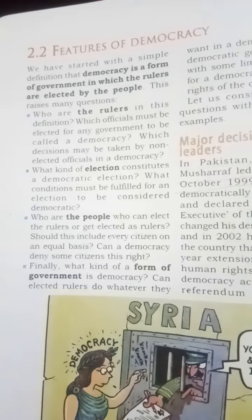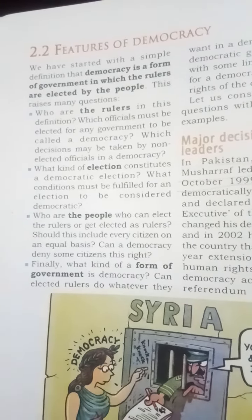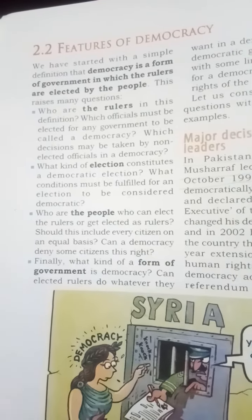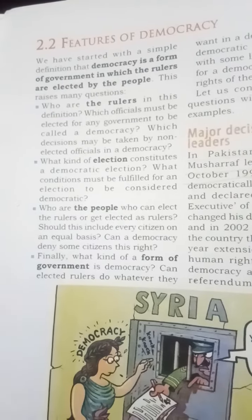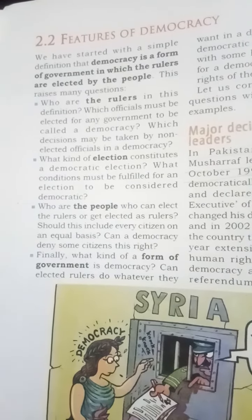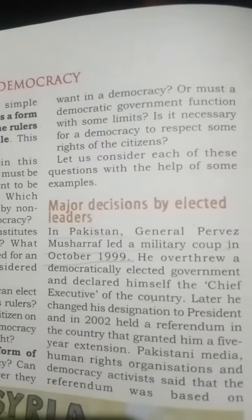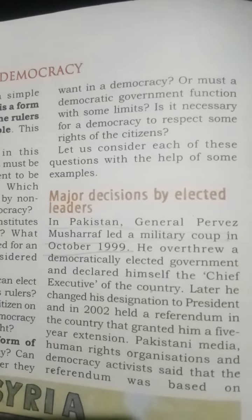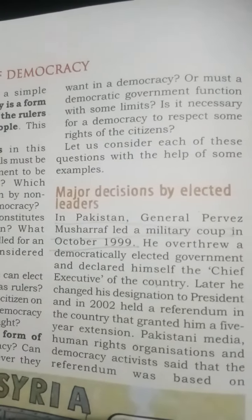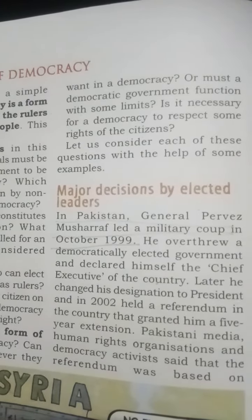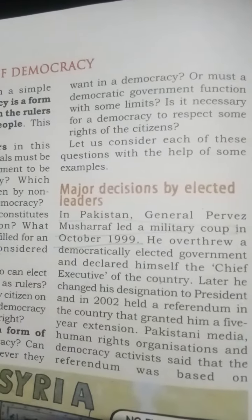Should this include every citizen on an equal basis? Can a democracy deny some citizens this right? Finally, what kind of form of government is democracy? Can elected rulers do whatever they want in a democracy, or must a democratic government function with some limits? It is necessary for democracy to respect some rights of the citizens.